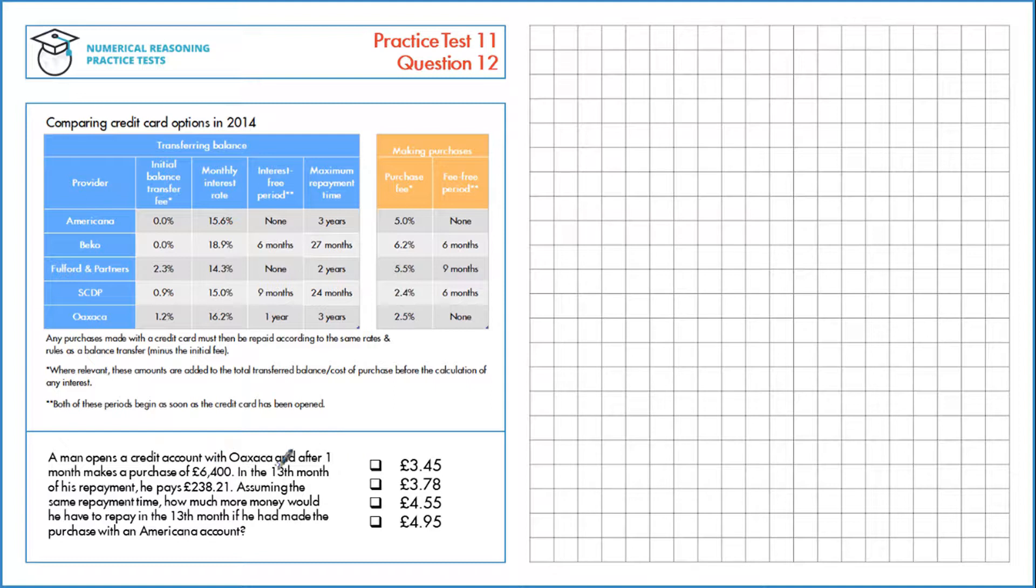So first let's look at the purchases for Oaxa. If we look at this one here, we see that there's a 2.85% purchase fee and no fee-free period. So we've got to increase this by 2.5%. So £6,400 times 1.025, that's an increase of 2.5%, is £6,560.